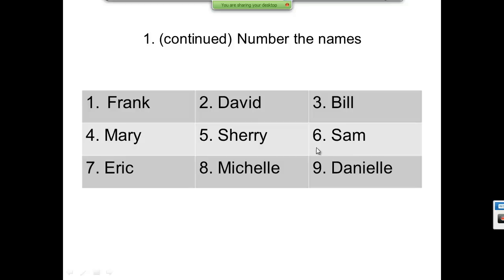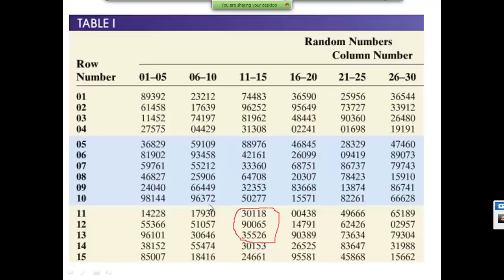So I number them: one, two, three, four, five, six, seven, eight, nine. If you don't number them in some manner, this doesn't really work very well. Now, if we turn to table one in Appendix A, we get a list of random numbers.